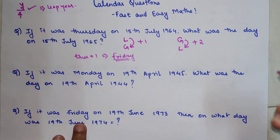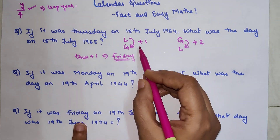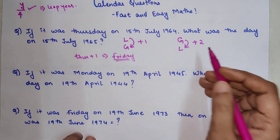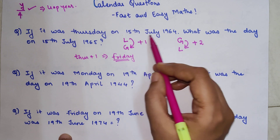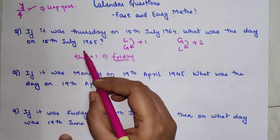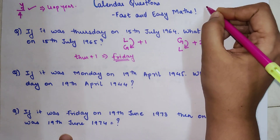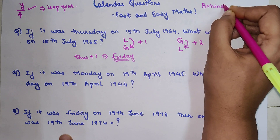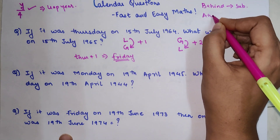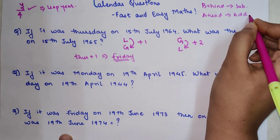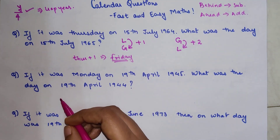This is a ground rule for all calendar questions: if you are going ahead in time, you add — either 1 or 2 days depending on the year types. But if you are going behind — for example, if 15th July 1964 was given and you had to find 15th July 1963 — then you subtract. So: going behind means subtract, going ahead means add.